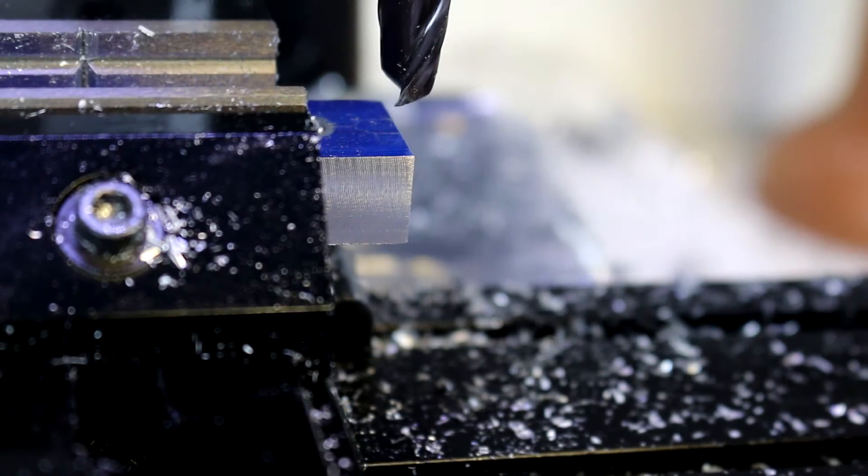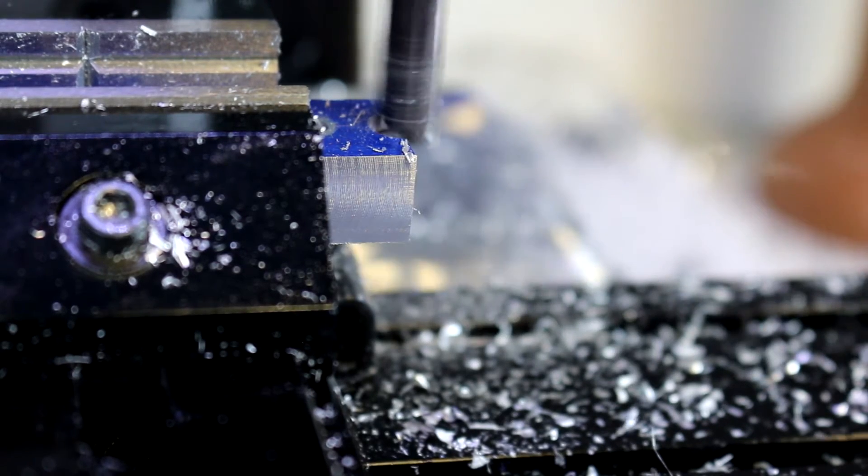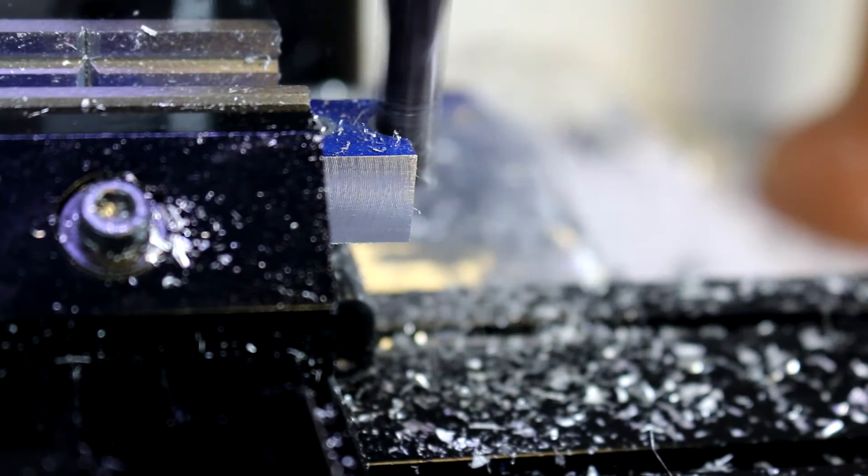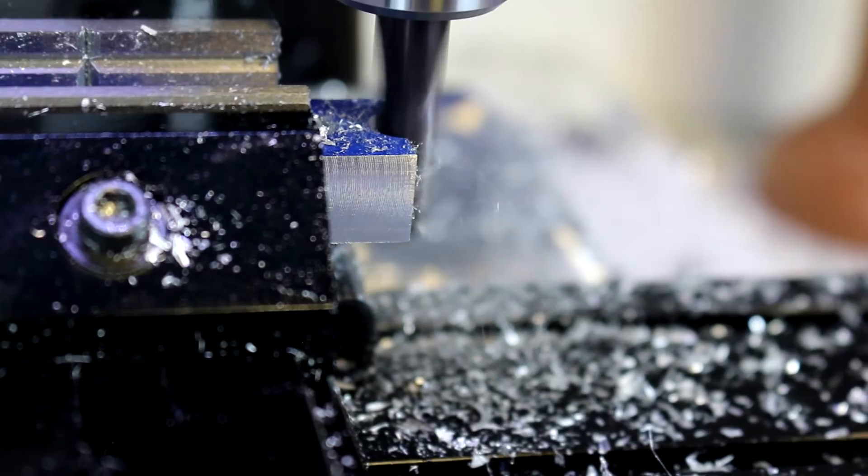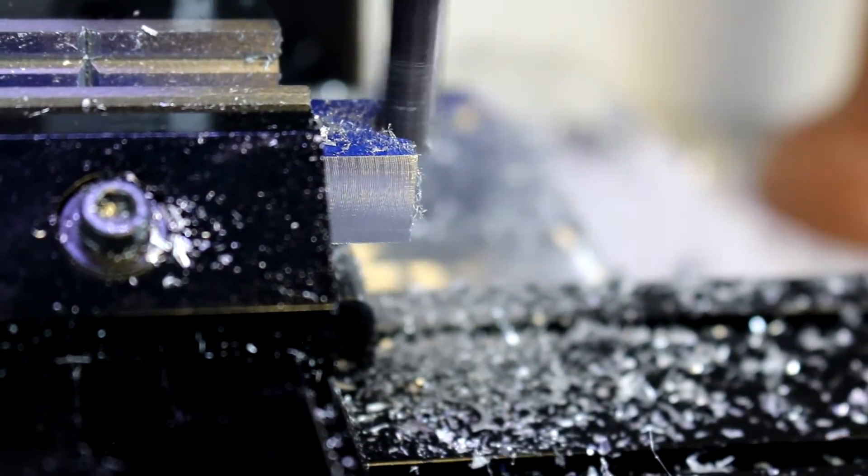So here I'm going to do some plunge cuts with the end mill. And the idea behind a plunge cut is we're mainly taking cuts with the bottom edge of the cutter. This is often one of the fastest ways of doing cuts.